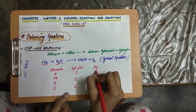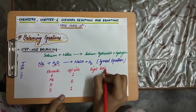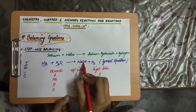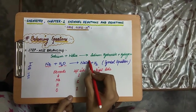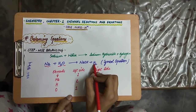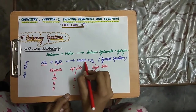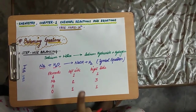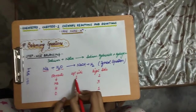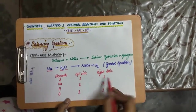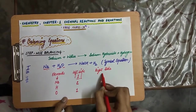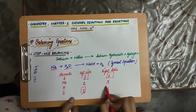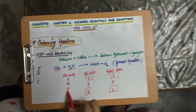Moving to the right hand side, the number of atoms of sodium is 1 and oxygen is also 1. But hydrogen has 3 atoms — 2 here and 1 here — so the total number of atoms of hydrogen is 3. We can see that sodium is equal on both sides (1 and 1), and oxygen is also balanced. So we have to balance hydrogen.